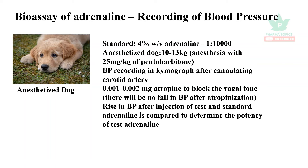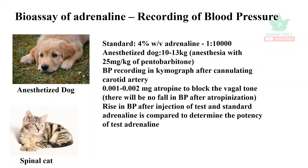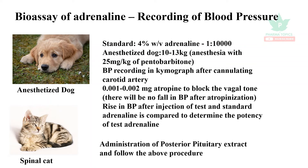Before starting the experiment, atropine is administered to block the vagal tone, so there will be no fluctuation in BP. After atropinization, the rise in BP after injection of the test and the standard will be compared to determine the potency of the test adrenaline. The same procedure is used for the spinal cat, where posterior pituitary extract is injected.